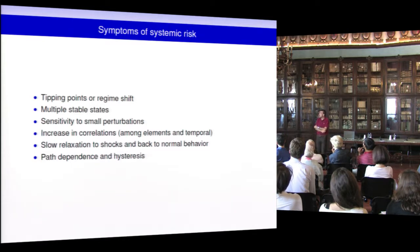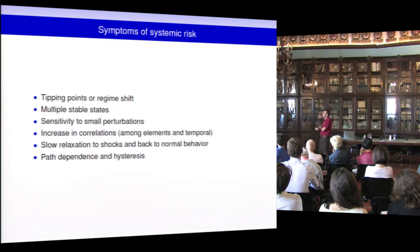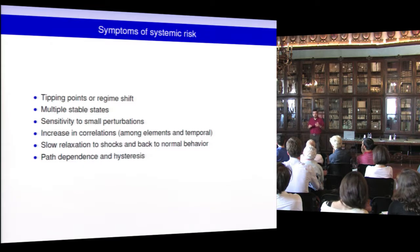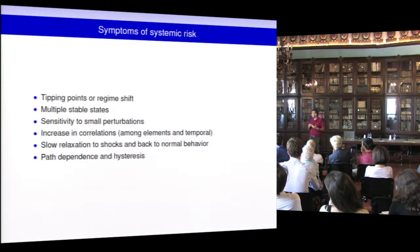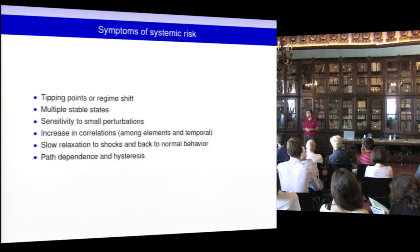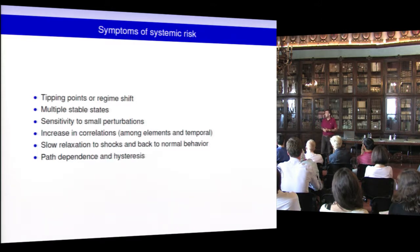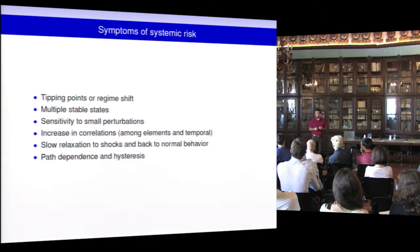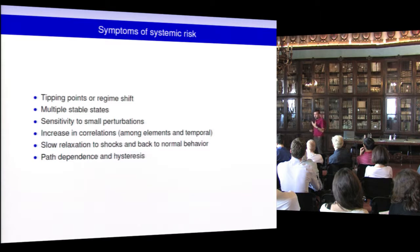What are the symptoms of systemic risk? If you look for the words that appear most frequently when people discuss systemic events, the key terms are tipping points or regime shifts, depending on the field. This is when the system changes abruptly — its statistical properties change abruptly, or the model itself that describes the system changes. There are multiple stable states, and a shift means moving from one stable state to a very different one. You start to have sensitivity to small perturbations that were previously absorbed by the system but now introduce very large fluctuations.